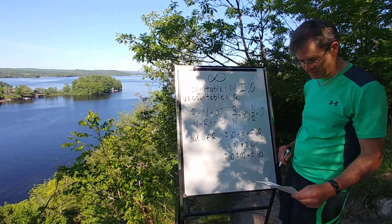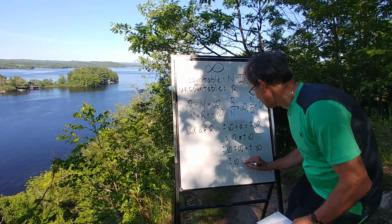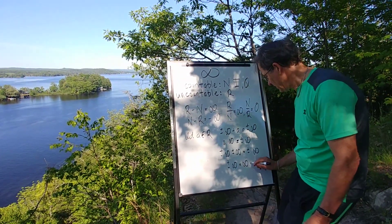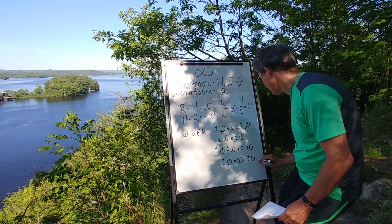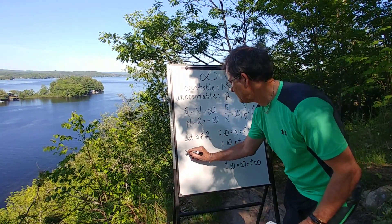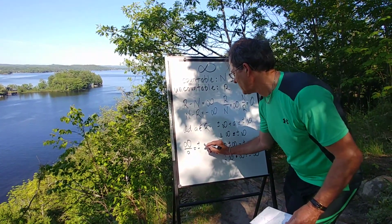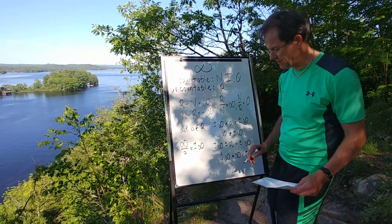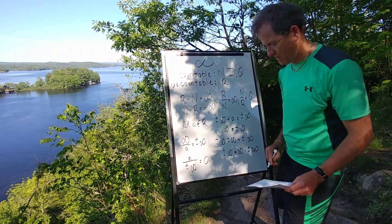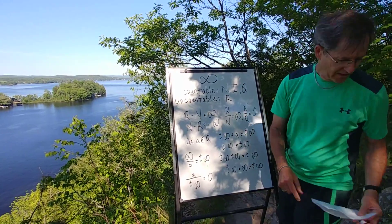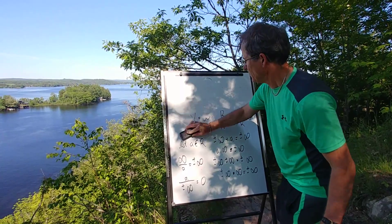If I multiply plus or minus infinity times another infinity, I get plus or minus infinity. Now, dividing infinity by a real number a will give me plus or minus infinity depending on whether a is positive or negative. And if I divide a by plus or minus infinity, I simply get zero. Those ones are pretty straightforward.